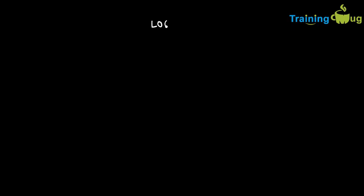Let us understand the logic first. How do you find out the reverse of a particular given number? For example, suppose I take a number as input like 1234. Now how do I find the reverse of it? Ultimately I need to get an output like 4321. So this is what the reverse of a number means.